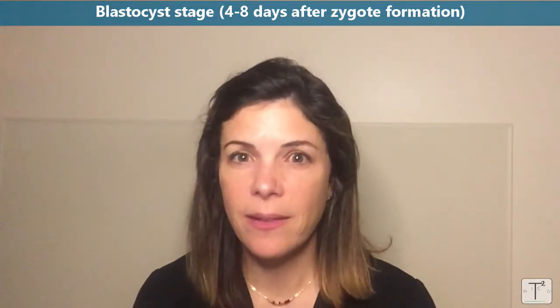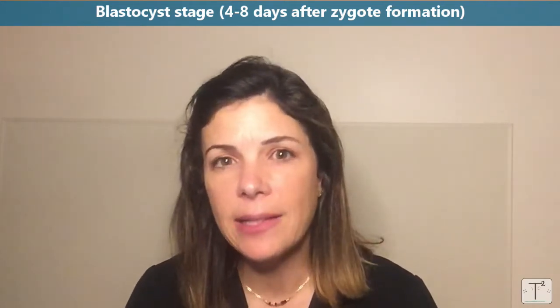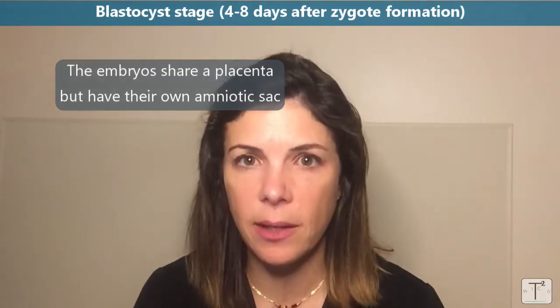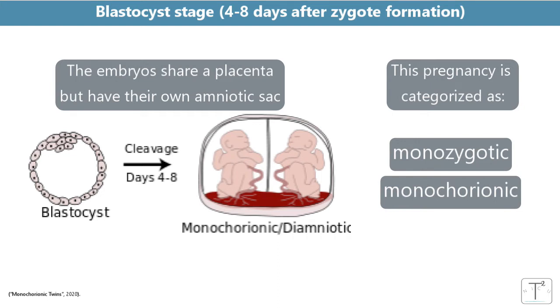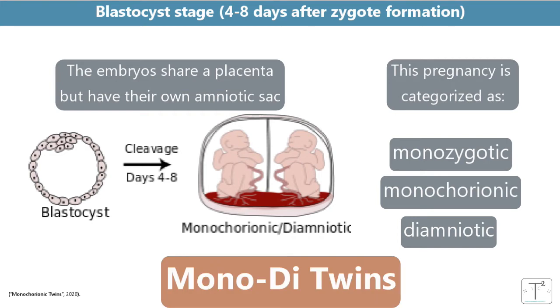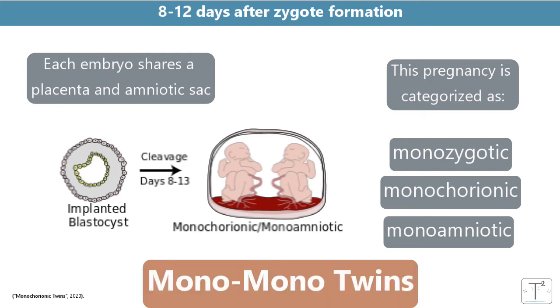If the zygote splits at the blastocyst stage — between four to eight days after zygote formation — then the identical twins will end up sharing a placenta but having their own amniotic sac. So the monozygotic twins will have a monochorionic but diamniotic pregnancy. These are the twins we call mono-di twins. Division at the eight to twelve day stage will result in the identical twins sharing their placenta, so monochorionic, as well as their amniotic sac, so monoamniotic. These are the twins we call mono-mono twins — by definition, they have to be identical twins.